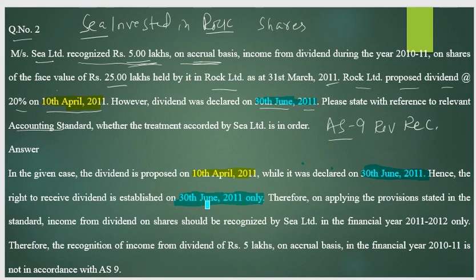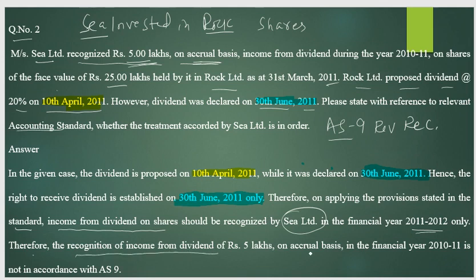Therefore, applying the provisions of AS-9, income from dividend should be recognized by C Limited in the financial year 2011-12, not 2010-11. It should be shown on an accrual basis. There are only two bases for recognition: one is time basis and two is accrual basis.